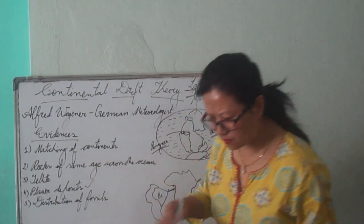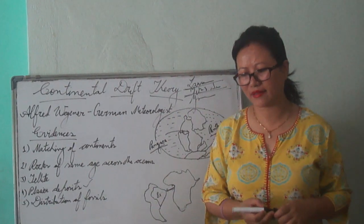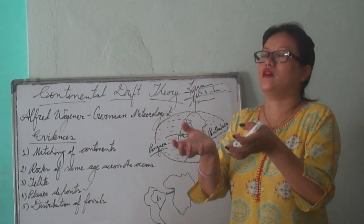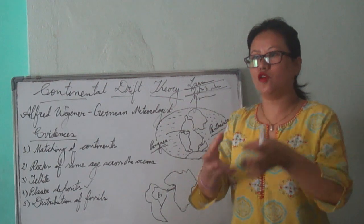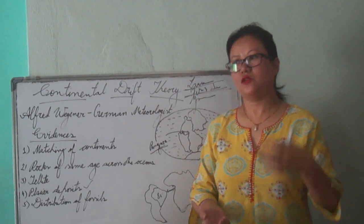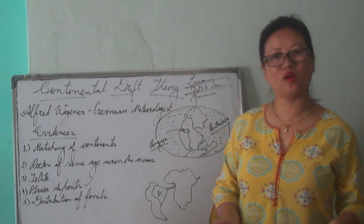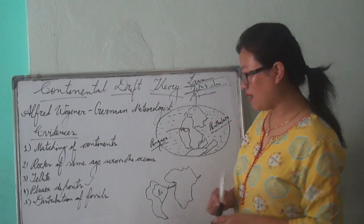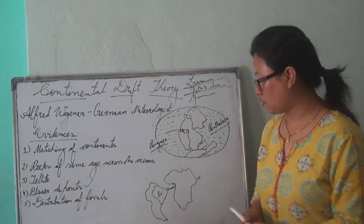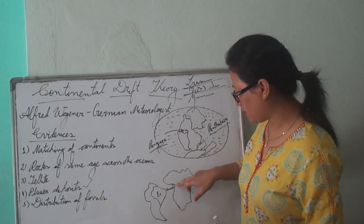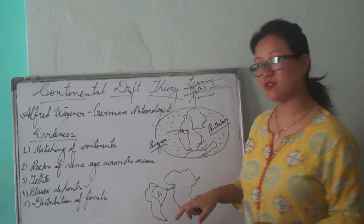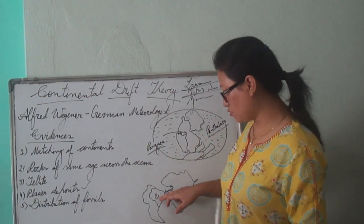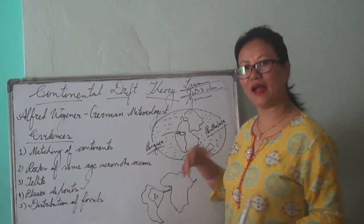Next, we have Placer Deposits — these are accumulations or gatherings of valuable minerals. Normally, gold is found in rocks, but in Brazil it is found in Placer Deposits. Similarly, it is also found in Placer Deposits in Ghana. This is another proof that these two portions — Brazil and Ghana — were together at the beginning.